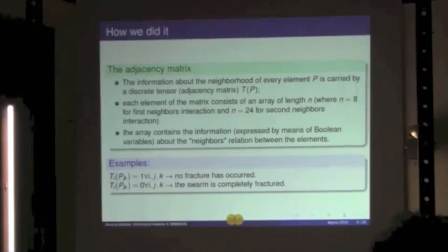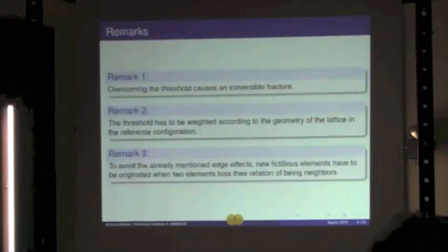And the array basically contains a switch-on of information, saying if the bonding with its neighbors is broken or not during the evolution of the system.